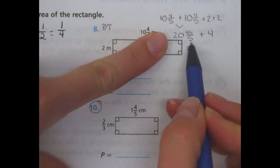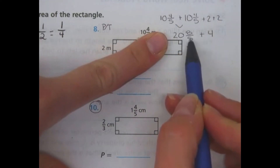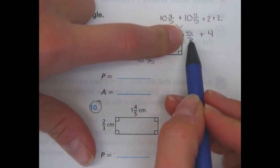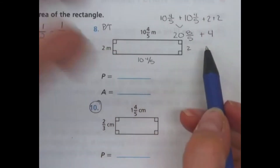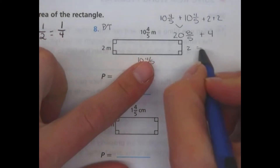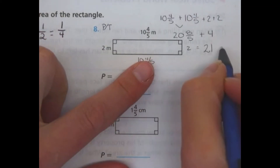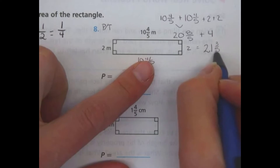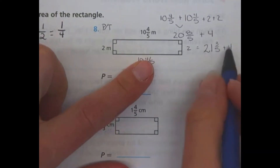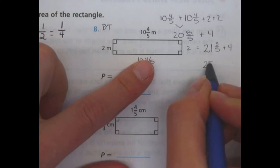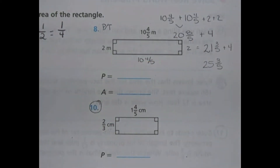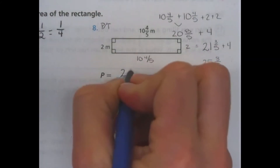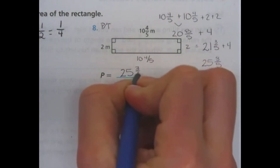Now, you may notice this is an improper fraction in here, so I am going to deal with this part right now. Five goes into eight once, so I can pull a whole out of there. That would make this become twenty-one, and then I have three-fifths plus four. I add them together and end up with twenty-five and three-fifths meters.